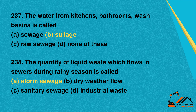Question 238: The quantity of liquid waste which flows in sewers during rainy season is called. A. Storm sewage. B. Dry weather flow. C. Sanitary sewage. D. Industrial waste. Correct option: A. Storm sewage.